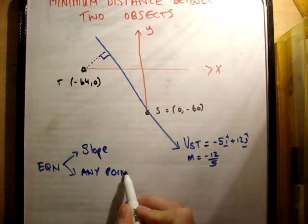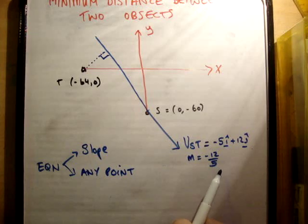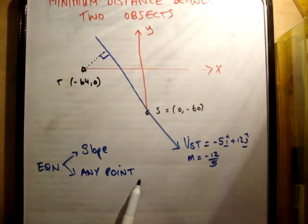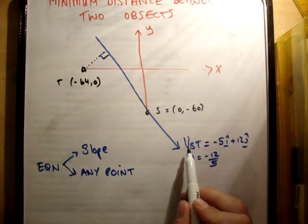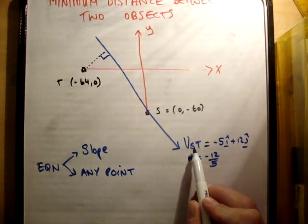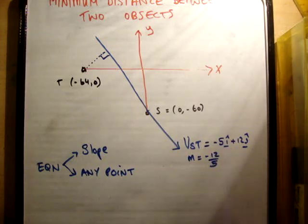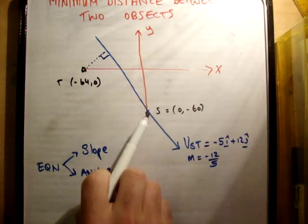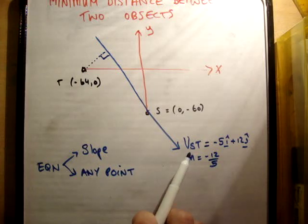Now, just bear with me for a moment. We want to get the equation of this line. And in order to get the equation of a line, you need two pieces of information. You need the slope of the line and you need any point. You only need a single point on the line. Now, we have the slope because it's -12/5, and now we need a point. So we need to know at least one point where the line goes through.